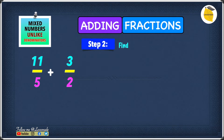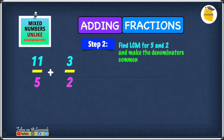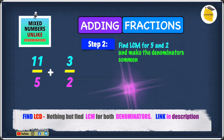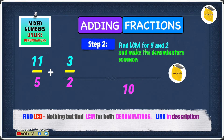Step 2 is to find the LCM for both 5 and 2 and make the denominators common. The LCM for both 5 and 2 is none other than 10.